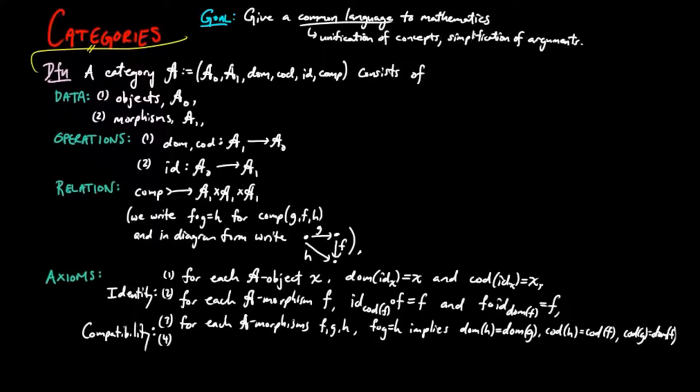This axiom ensures that the triangle diagram that we have above makes sense. The second compatibility axiom states for each amorphism F, G, if codomain of G is equal to the domain of F, then there exists a unique morphism H such that F, G is equal to H.